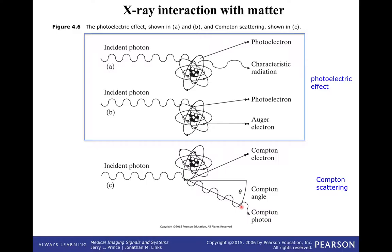If the Compton scatter angle is high enough, the scattered photon misses your detector — that's generating contrast by absorption. However, if the angle isn't high enough, the photon deflects and still hits the detector, but from a different angle — it's hitting from the wrong direction. That's called scatter, and it degrades image quality.